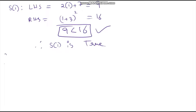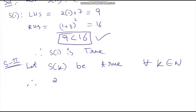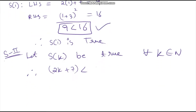Now in step 2, let S of k be true for all k belonging to the natural numbers. Therefore, 2k plus 7 is less than (k plus 3) whole square.